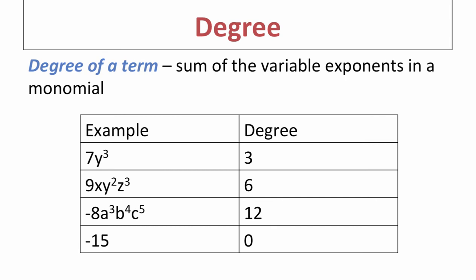The degree of a term is the sum of the variable exponents on a monomial. For 7y to the third, the only exponent is 3, so the degree is 3. For 9xy squared z to the third, you have one plus two plus three, giving a degree of six. For negative 8a cubed b to the fourth c to the fifth, three plus four plus five gives 12. If there is no variable, the degree is zero.